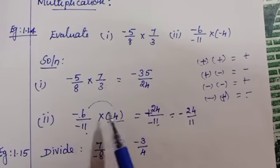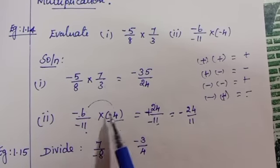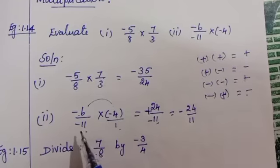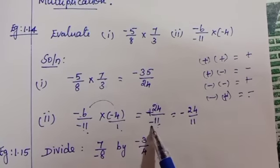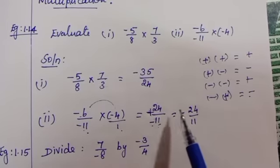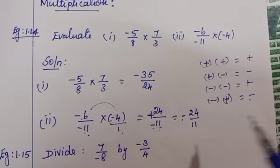Once again listen: 6 × 4 = 24, minus into minus equals plus. -11 × 1 = -11. Plus by minus is minus. So that is -24/11.